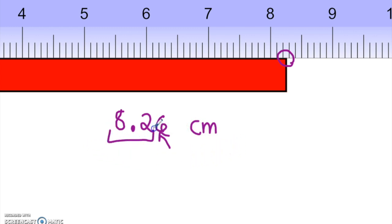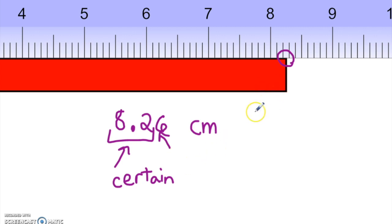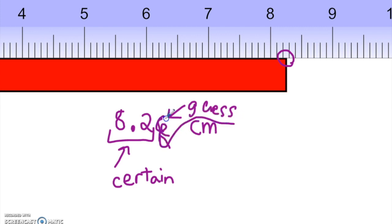With this example, 8.2 — those digits we are certain about. We know for a fact that our rectangle is at least 8.2 centimeters. The 6 was a guess, and that's okay. That's what a significant figure is — it tells you the precision. By including this guessed digit, we are telling people that this ruler measures to the nearest millimeter, but we will go one digit further and estimate. Let's do another example.